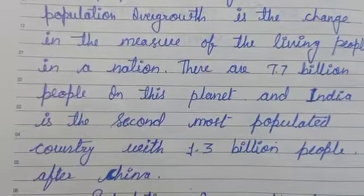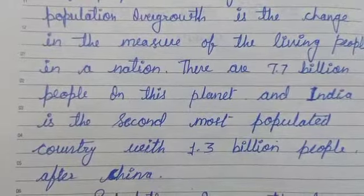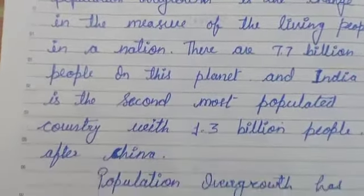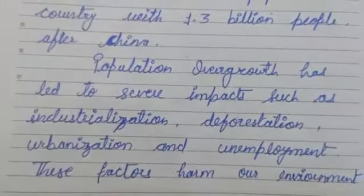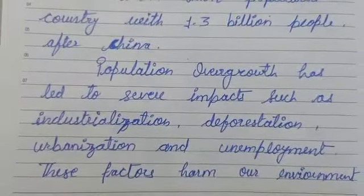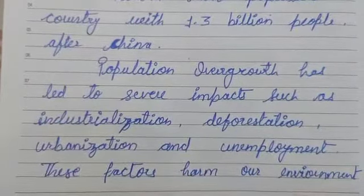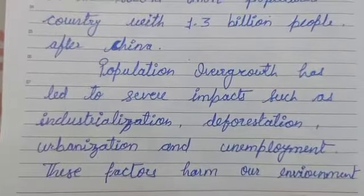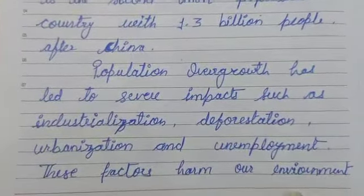India is the second most populated country with 1.3 billion people, after China. Population overgrowth has led to severe impacts such as industrialization, deforestation, urbanization, and unemployment. These factors harm our environment.